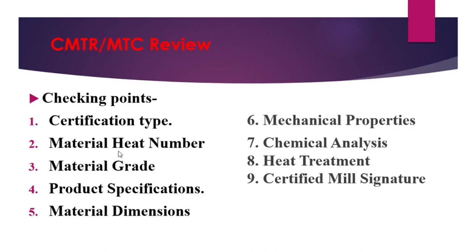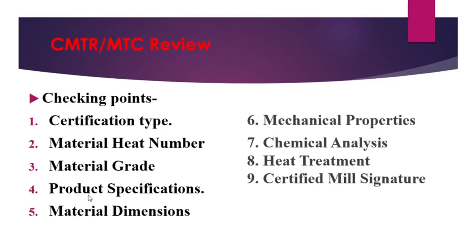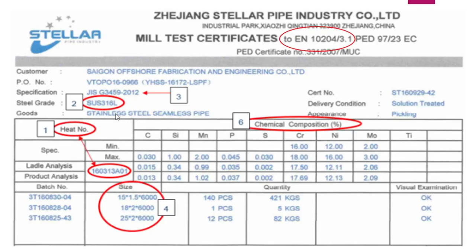Third is the material grade. So I show you what is the material grade - you can see here the steel grade. The material grade and product specification are shown together. You can see here the material grade, and this is the product specification. So JIS G3459-2012 - this is the product specification for this certificate. This is a JIS standard material.